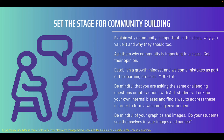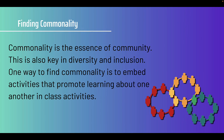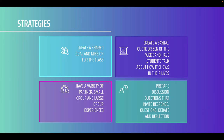Now let's look at how to build community student-to-student. Help your students find commonality — this is also key in diversity and inclusion. One way is to embed activities that promote learning about one another in classroom activities. Consider small group activities, paired activities such as think-pair-shares, and using technology to facilitate collaboration and feedback with an audience response system or something easy like Poll Everywhere. Start small: consider adding a brief two-minute buzz group to break up the lecture, an exit ticket for students to analyze their learning, or a brainstorming session — anything that gets students talking to one another.